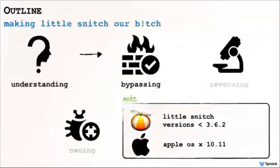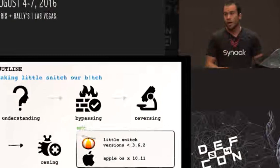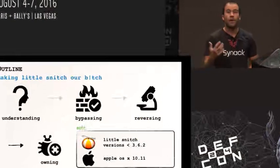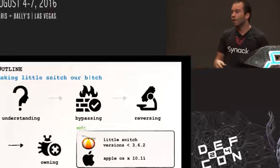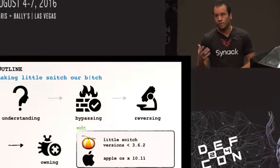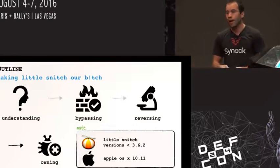Alright, so we only have 20 minutes, so we're gonna jam through a good amount of stuff. We're gonna start by briefly talking about what Little Snitch is. We're then gonna talk about how to bypass it — how to exfiltrate data or talk to a command and control server without being detected by the firewall. We're then gonna talk about reverse engineering the kernel component, looking for a security vulnerability, and then talk about how to exploit a bug that I found.